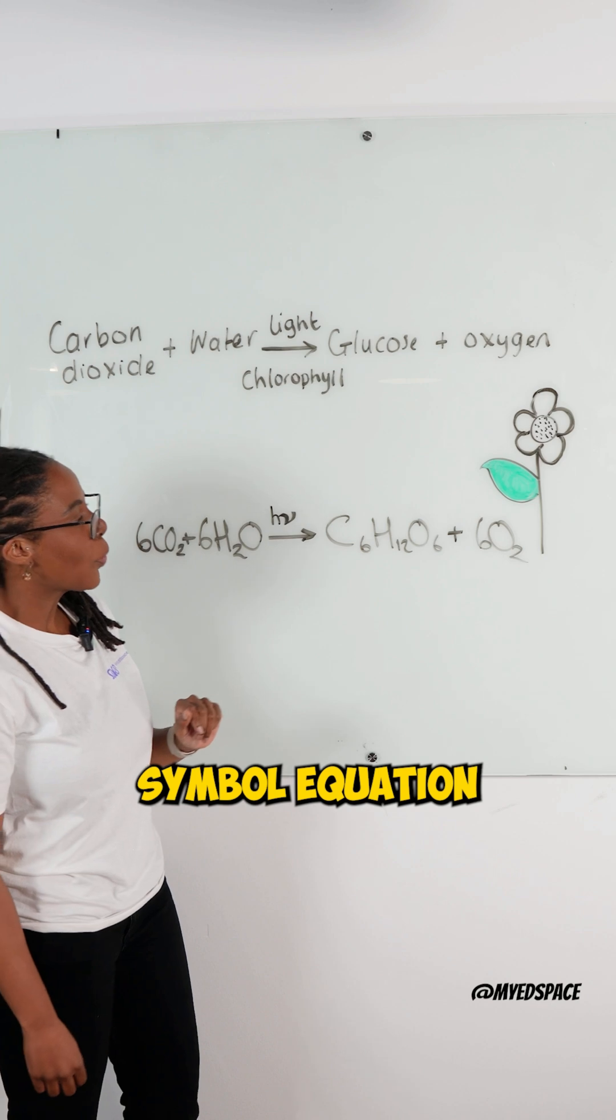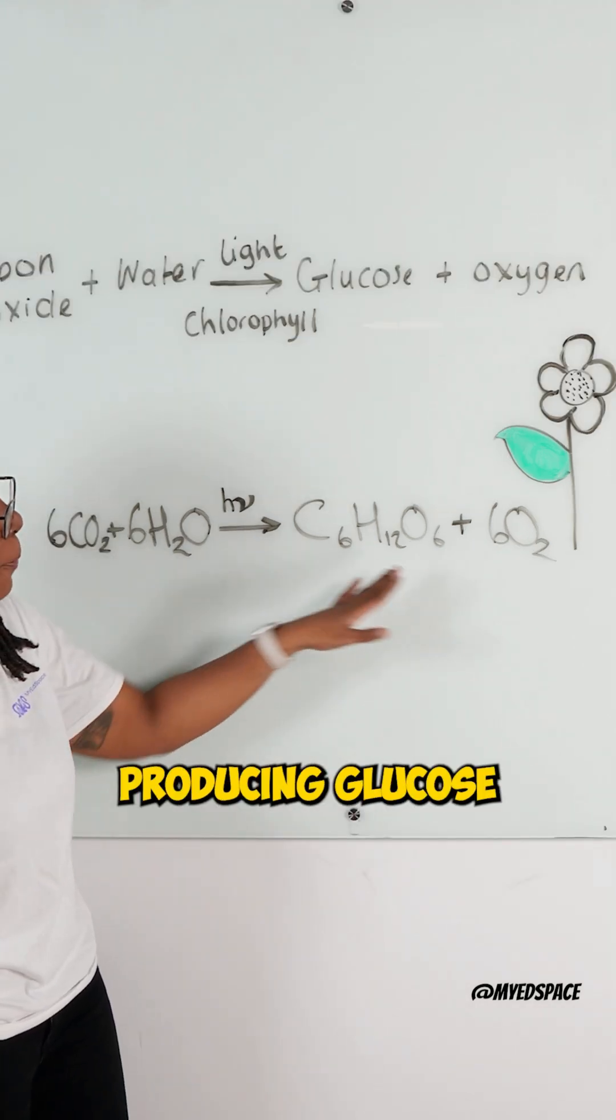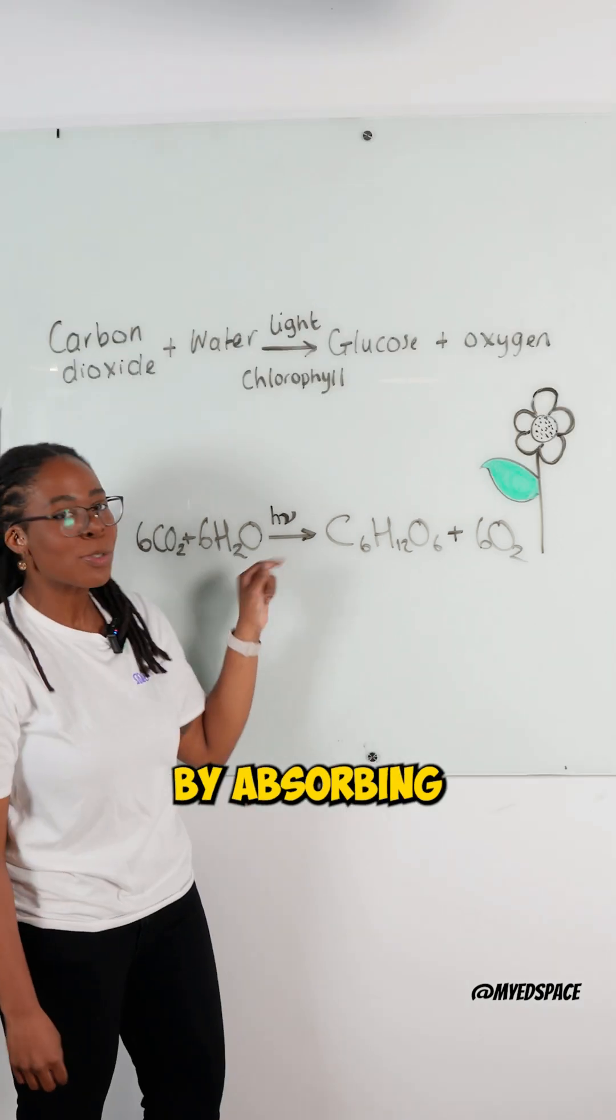In chemistry, we much prefer symbols. So this is the balance symbol equation for photosynthesis, carbon dioxide and water producing glucose and oxygen by absorbing light energy.